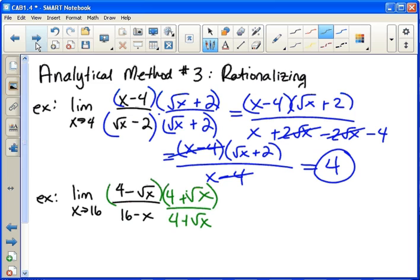Four times the square root of x. Four times the negative square root of x. Those will just cancel out. And then negative square root of x times positive square root of x is negative x. And on the bottom, sixteen minus x and four plus the square root of x.